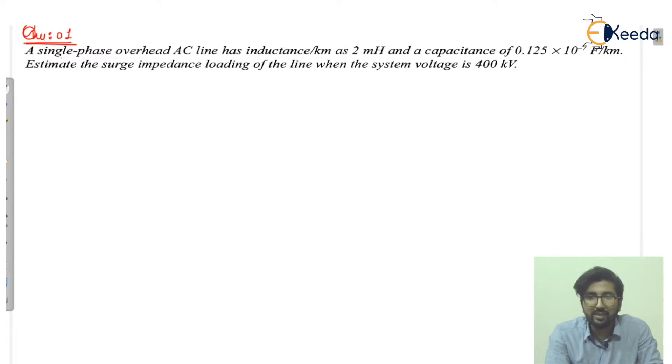It is given as single phase overhead AC line, and inductance is given, so inductance means L. What is the value of L? This is given 2 millihenry, so it is 2 millihenry per kilometer.